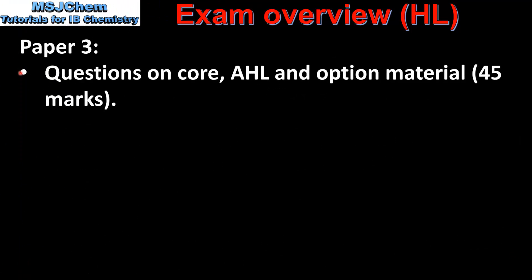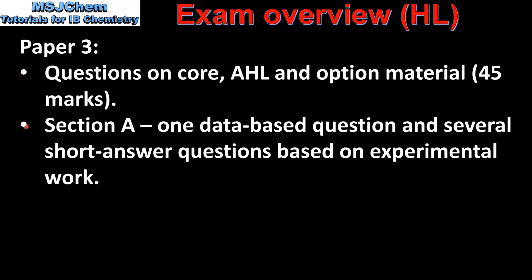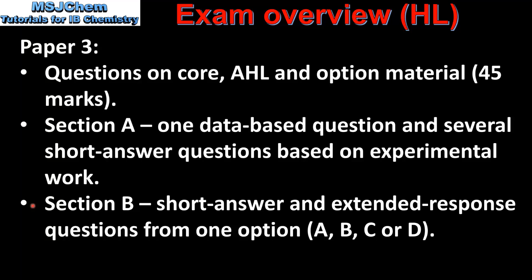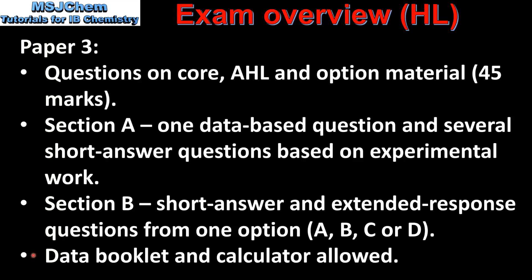And finally we look at paper 3. Paper 3 covers questions on core, higher level and option material for a total of 45 marks. Paper 3 is divided into two sections. Section A has one data based question and several short answer questions based on experimental work. Section B has short answer and extended response questions from one option — you should only answer questions from one option, that's either A, B, C or D. In paper 3 a data booklet and calculator are allowed.